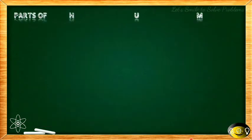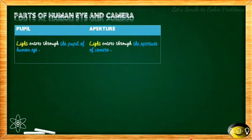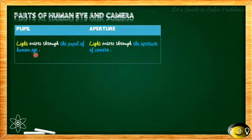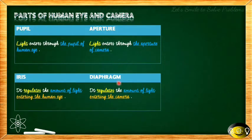The first similarity is between pupil and aperture. In the human eye, light enters through the pupil — the pupil is where light enters. Similarly, for the camera, light enters through the aperture. Both serve the same function of allowing light entry in their respective systems.